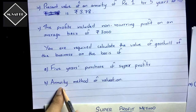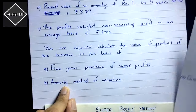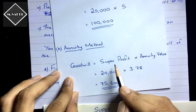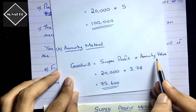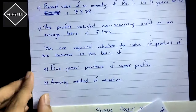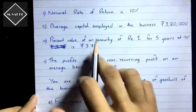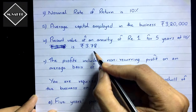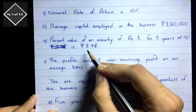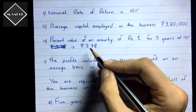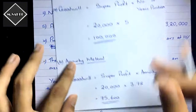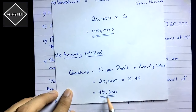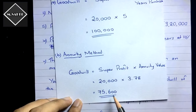For the annuity method, we discount the future value of super profit by multiplying it with the annuity value given in the question. The question states: present value of an annuity of ₹1 for five years at 10% is ₹3.78. So: Goodwill = ₹20,000 × 3.78 = ₹75,600.